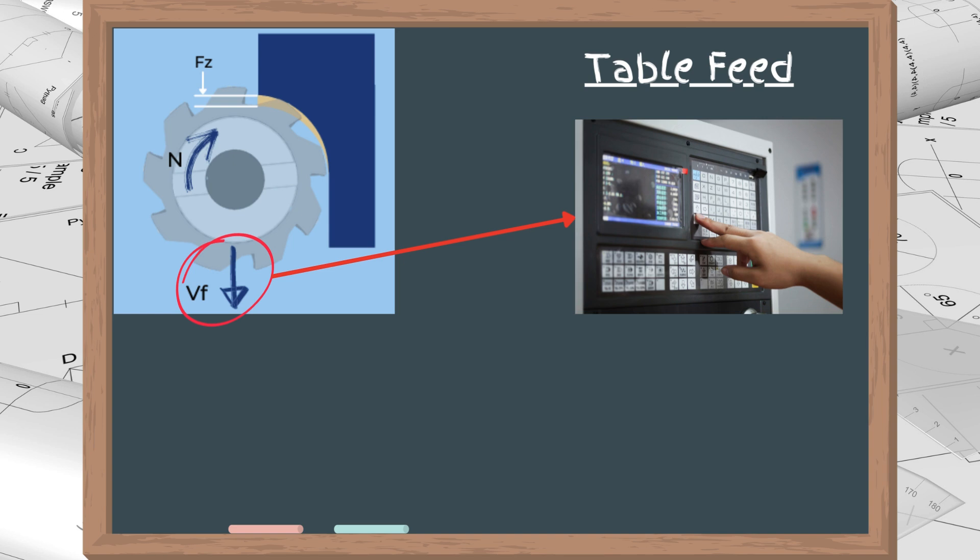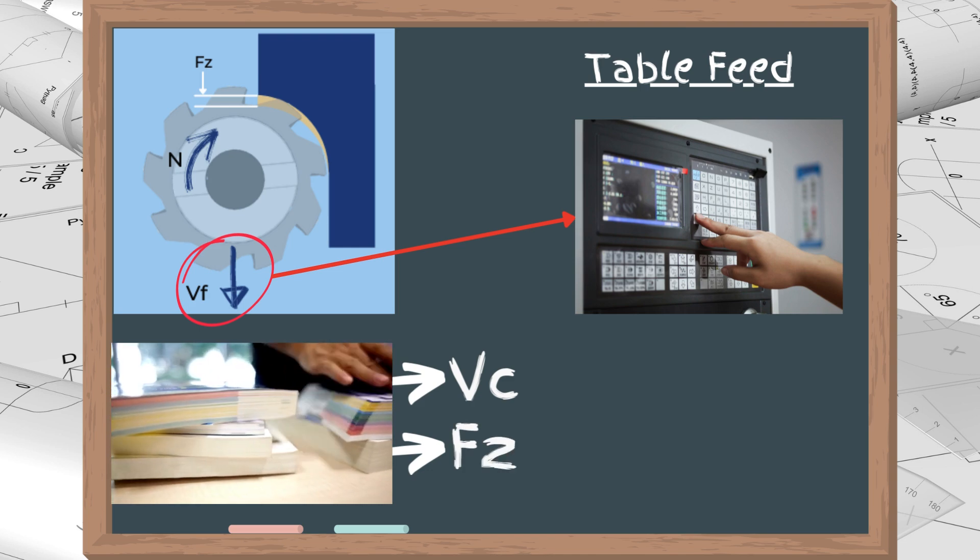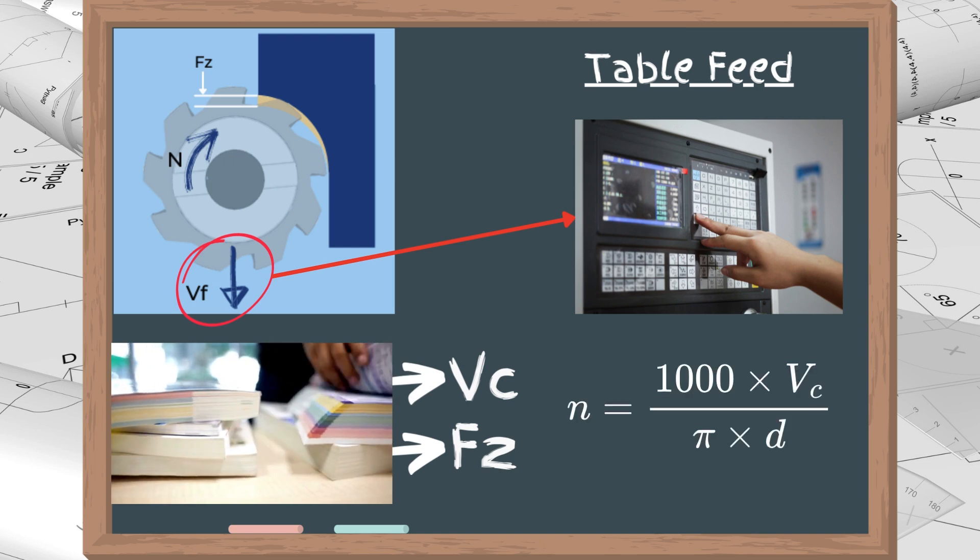This is the actual parameter that is programmed into the CNC machine. However, it is not provided directly. The basic parameters that we can obtain from the tool catalog are the cutting speed and the feed per tooth. From the cutting speed, we can calculate the spindle speed, as I showed you earlier in this video.